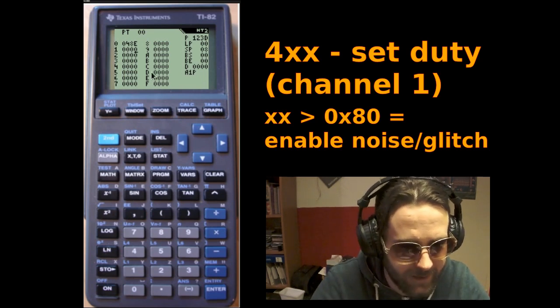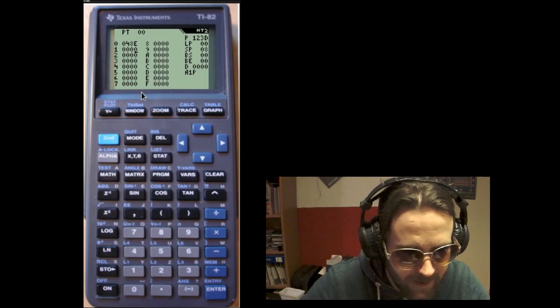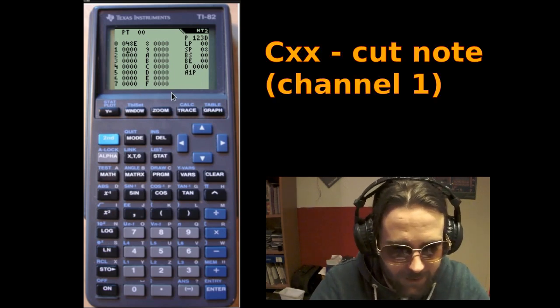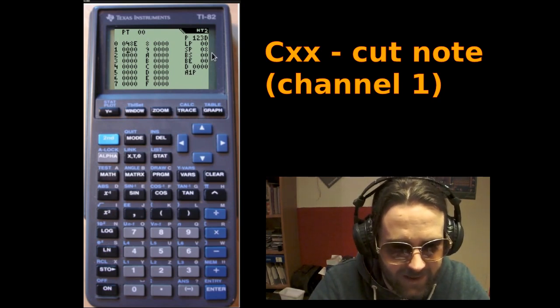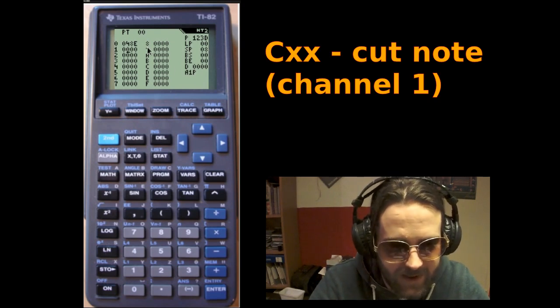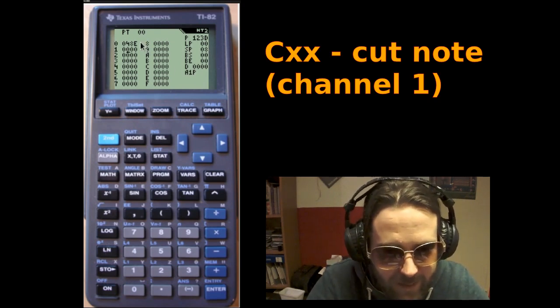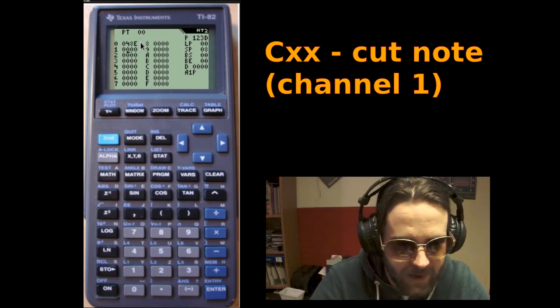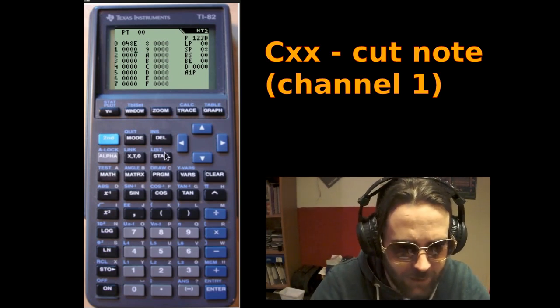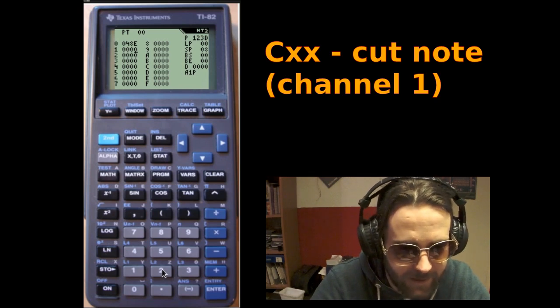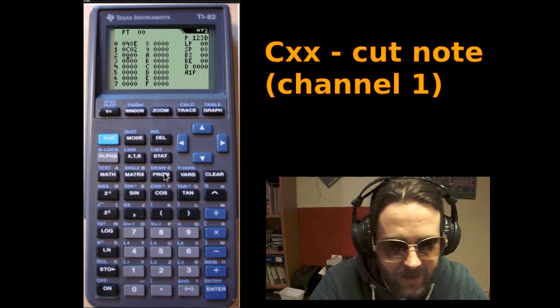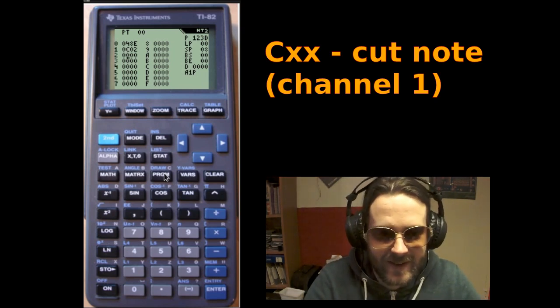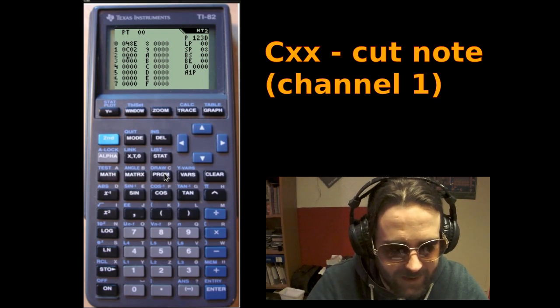The next new effect is also one that goes for channel 1, the CXX effect or note cut. This works pretty much as you might expect. Here you got your speed setting, right? So 8 means that each row takes 8 ticks or 8 frames to execute. If you want to cut off at 2 frames, for example, then you would enter C02, and now you get these short bursts instead of the whole tone.